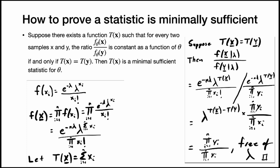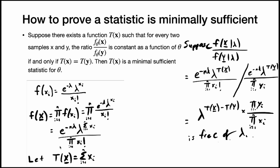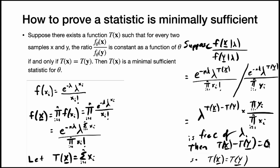Now we go the other direction: suppose the ratio is constant as a function of lambda, and show that the statistics must be equal. We had simplified the ratio before. For this ratio to be free of lambda, the exponent must be zero — we have to raise lambda to the zero power to eliminate it. So it's only free of lambda when t(x) minus t(y) equals zero, meaning when t(x) equals t(y). That proves the other direction, so we know that this statistic is minimal sufficient, not just sufficient.